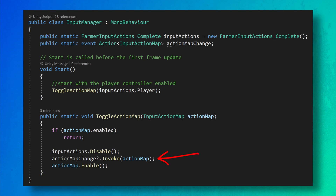Next, we invoke the action map changed event. This allows things like the UI to be aware of changes and give the player a visual indication of the change. This could also be used to toggle cameras or sound effects depending on the action map activated. This step is optional, but I think it will generally prove pretty useful in most games. The last step is to enable the desired action map. And with that, we now have the ability to change the global action map. So say what you will about the new input system, but that's mighty clean.